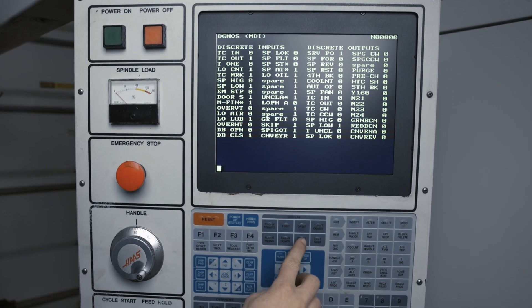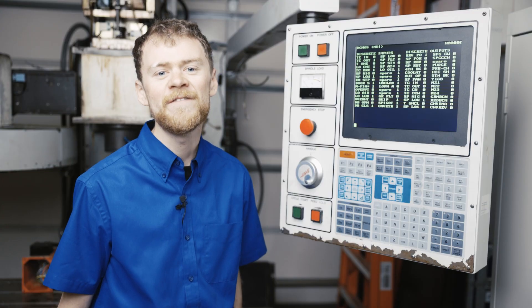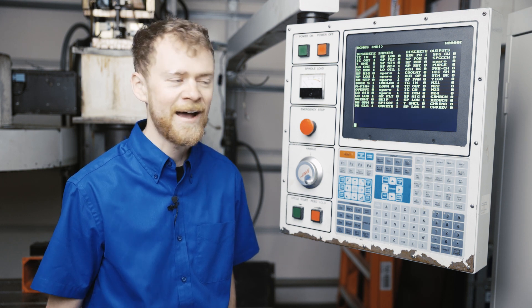To start with, you're going to need to go to setting 7 and disable the parameter lock. Then you're going to want to go to parameter 57 and disable the gearbox. But don't do that without first checking to be sure that you're in high gear.